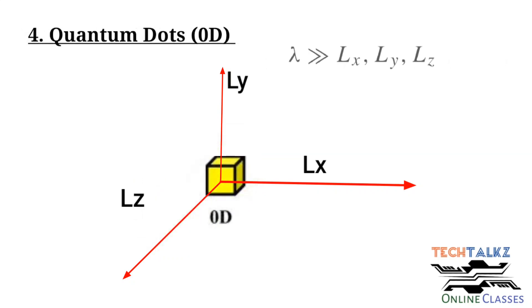Now the last case, here the electron movement is restricted along all the axis. That is, dimensions across x, y and z axis are restricted within 100 nanometer or within the characteristic length lambda.